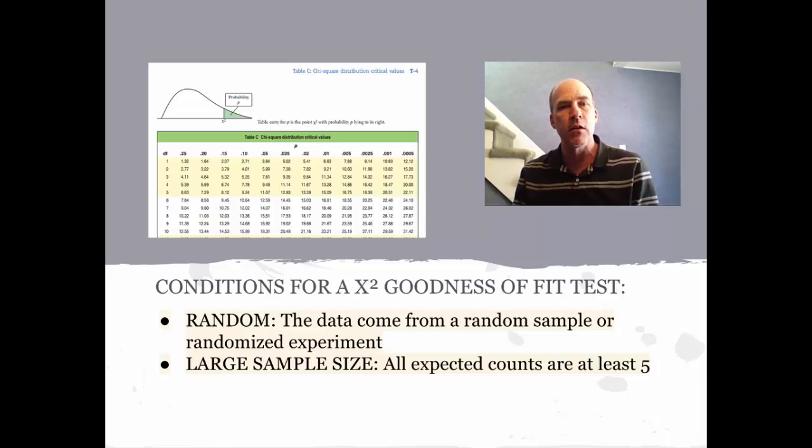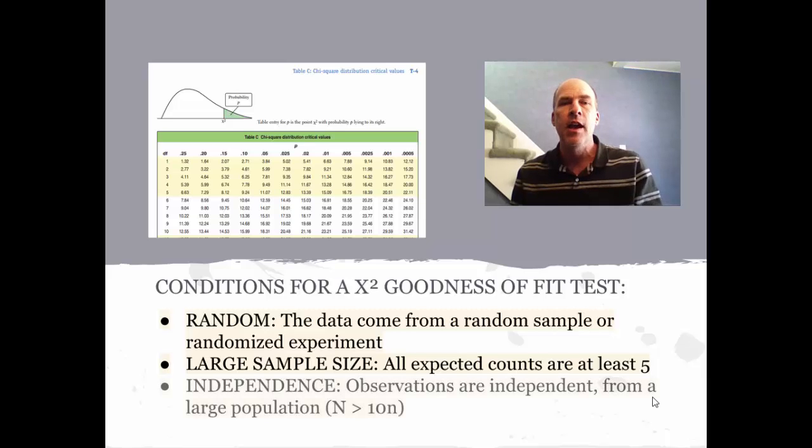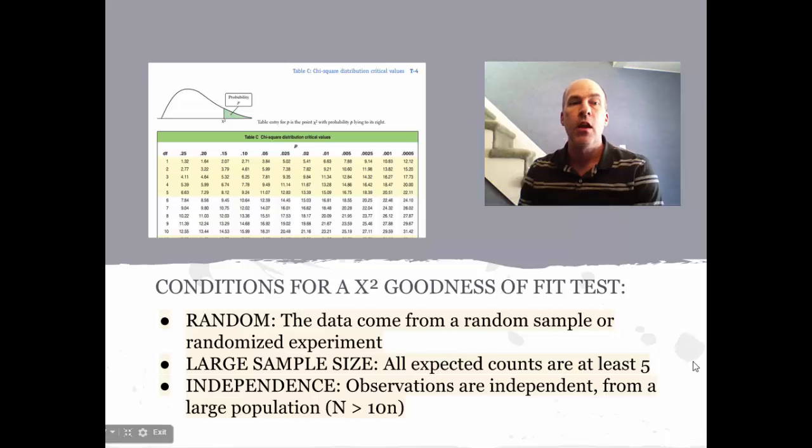This is a little bit different. We don't have any normality here like we had in t-tests and z-tests—we're talking about a totally different type of curve. But we do need large sample sizes: all of the expected counts have to be at least five. Finally, independence—the observations have to be independent from a large population. Once we have all this, we can take our chi-squared statistic and use a chi-squared table to find a p-value, then reach some decision about our null hypothesis.